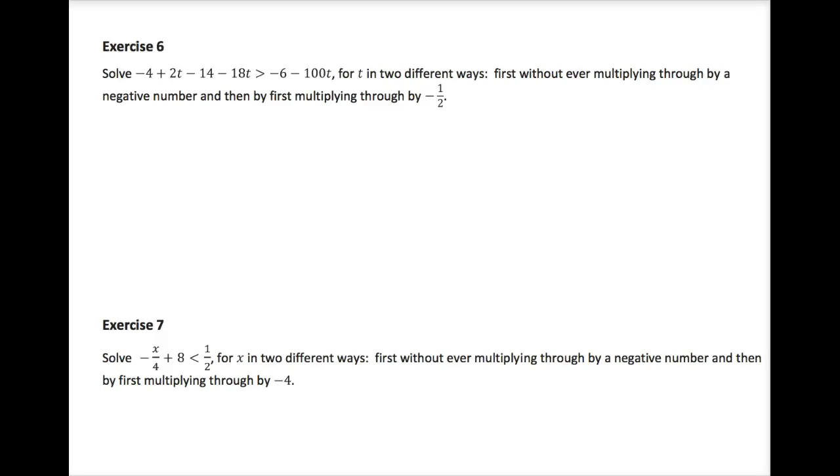Module 1, Lesson 14, Exercises 6 and 7. Now we have two reasonably complicated equations that we're going to solve through two different ways. One without ever using a negative, and then one by multiplying through by a half first. Let's see what it looks like. We'll look at the second one in a minute.